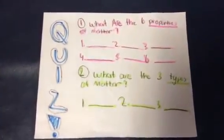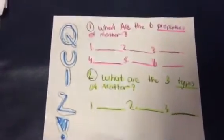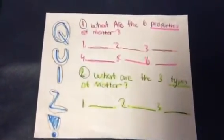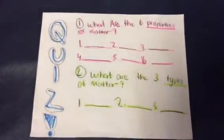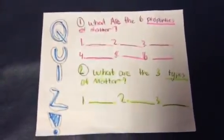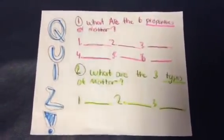Quiz! What are the six properties of matter? What are the three types of matter? Write them down on a piece of paper if you have one.